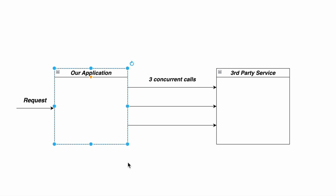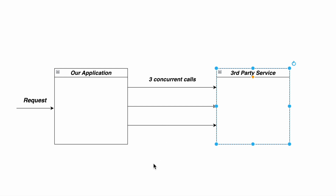Assume that our application has 50 threads in a thread pool; however, the third-party service is going to allow only three threads. So in that case, we can think of using the semaphore. Let's understand the concept of semaphore with this image.